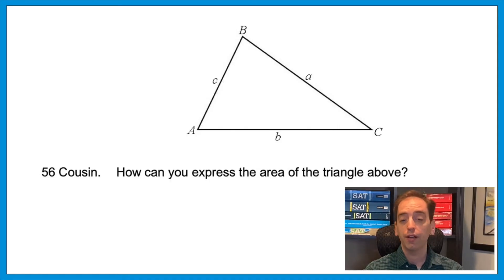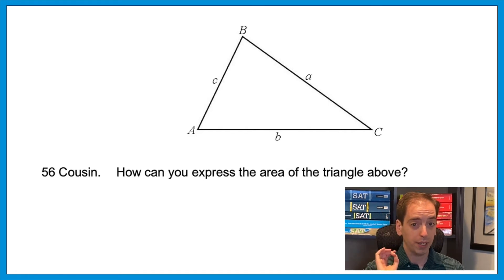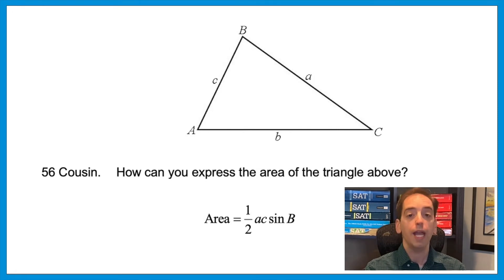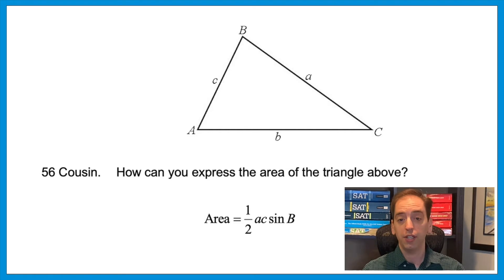Question 56 cousin: how can you express the area of a triangle when there's no perpendicular height? We use the formula: area = (1/2) × AC × sin(B). That means take two consecutive sides A and C and multiply by the sine of the angle between them. You could also use sides A and B times sin(C), or sides C and B times sin(A). Again, no major math — just a specific rule. The ACT does that a lot. Now let's look at a cousin of question 60, which is a bit more difficult.